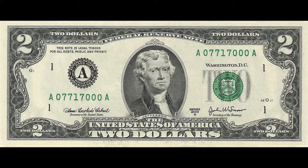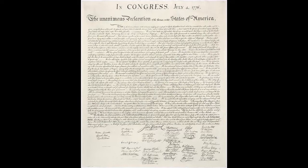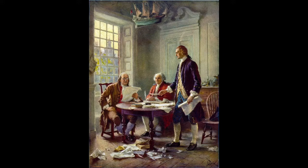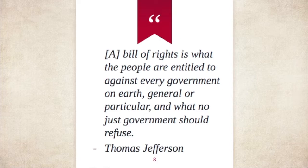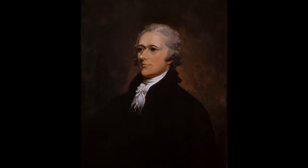One of the major advocates for adding a Bill of Rights was Thomas Jefferson. Thomas Jefferson was one of the American Founding Fathers, and he's probably most famous for being the main author of the Declaration of Independence. He was also the third U.S. President, and before that he served as the first U.S. Secretary of State under President George Washington. Thomas Jefferson said this: "A Bill of Rights is what the people are entitled to against every government on Earth, general or particular, and what no just government should refuse." Very powerful words from Thomas Jefferson.